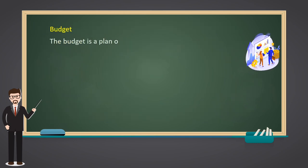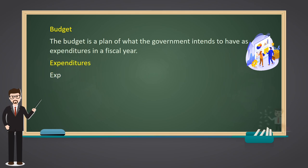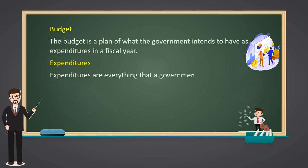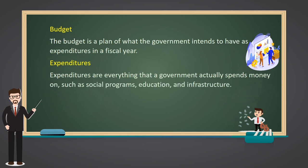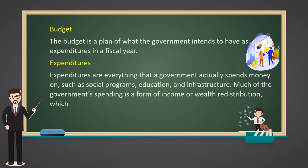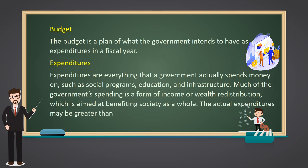The Budget is a plan of what the government intends to have as expenditures in a fiscal year. Expenditures are everything that a government actually spends money on, such as social programs, education, and infrastructure. Much of the government's spending is a form of income or wealth redistribution, which is aimed at benefiting society as a whole. The actual expenditures may be greater than or less than the budget.